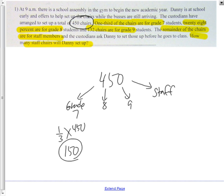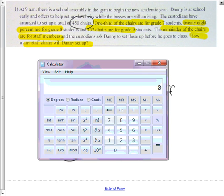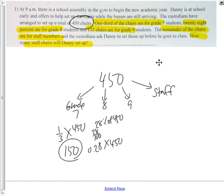For grade 8 it's 28%, so 28% of 450. As a decimal, 28% is 0.28, multiply that by 450. 28% of 450 is 126 chairs.